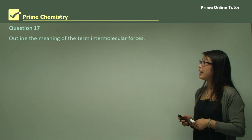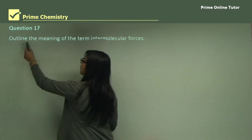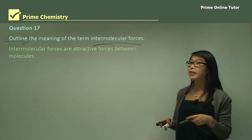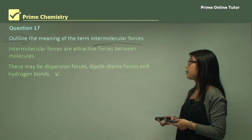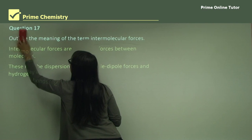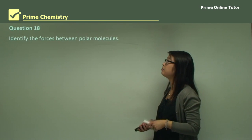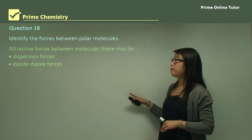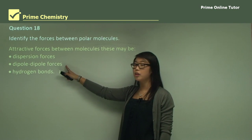Question 17 asks us to outline the meaning of the term intermolecular forces. Intermolecular forces are attractive forces between molecules, and these may be dispersion forces, dipole-dipole forces, and hydrogen bonds. Question 18 asks us to identify the forces between molecules. Attractive forces between molecules can be one of three types: dispersion forces — the weakest — then dipole-dipole forces, and then hydrogen bonds as the strongest.